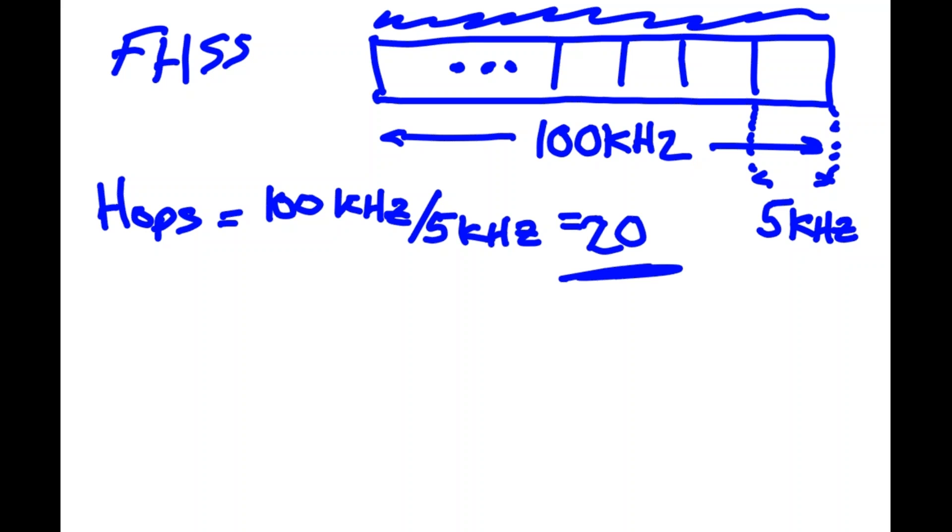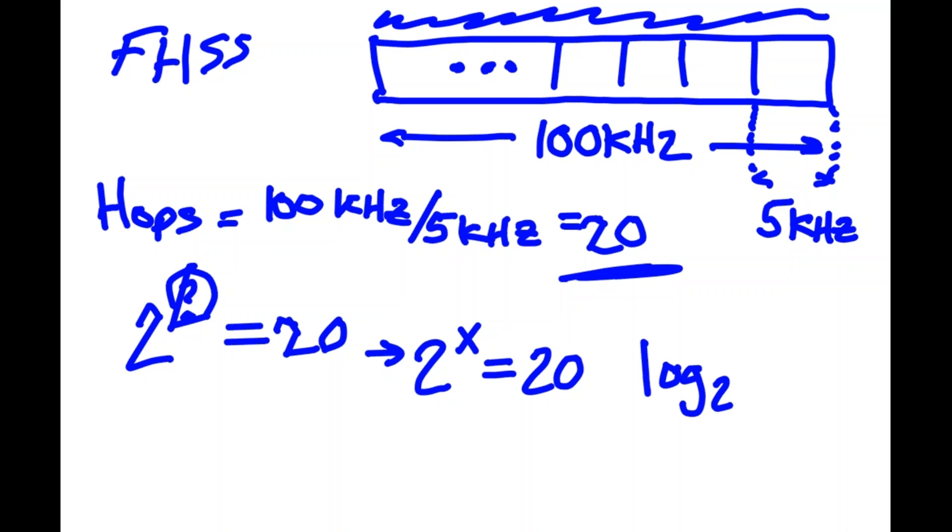This is a binary system. How many bits do we need in order to get those 20 hops? What we're saying is 2 to the what power is equal to 20. If we write that as 2 to the x power equals 20, we can use our logs. We can write that just the same as saying log base 2 of 20 is equal to x.